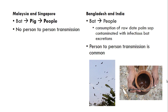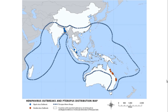In Bangladesh and India, fruit bats infect raw palm sap, and people who consume that raw palm sap get infected. Direct contact with infected bats is also a common mode, and person-to-person transmission is also common in Bangladesh and India. A geographical distribution map shows the commonly affected areas, with major spots in Bangladesh and India.